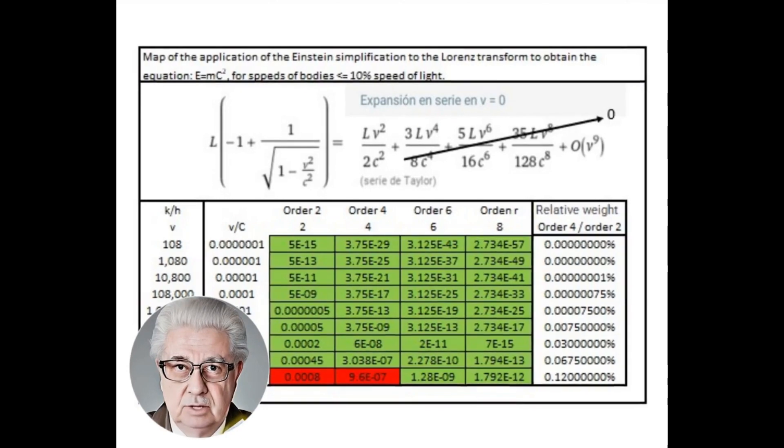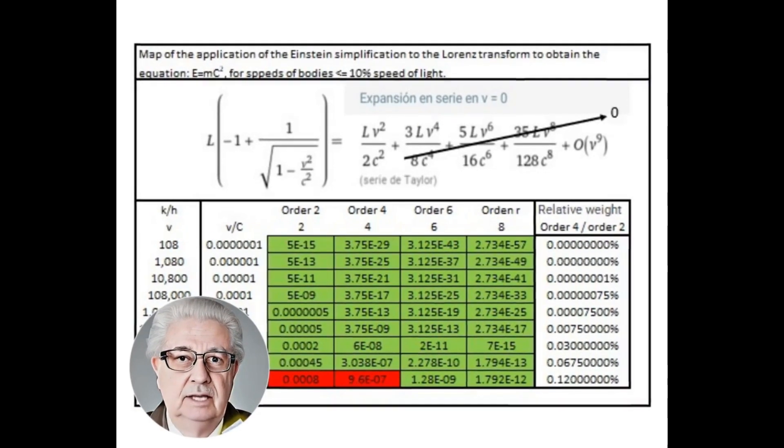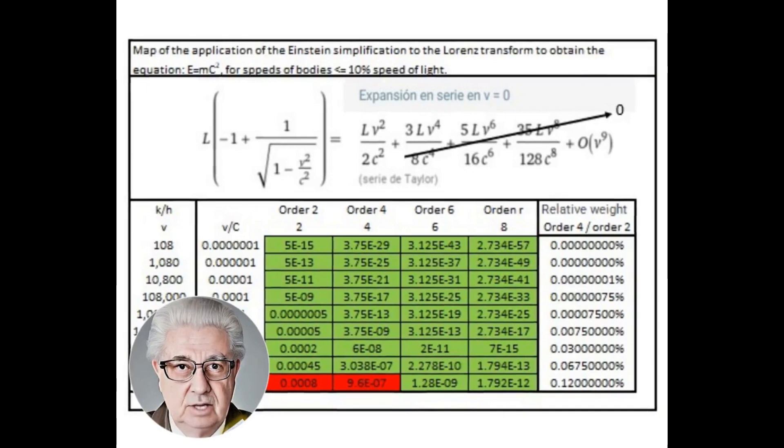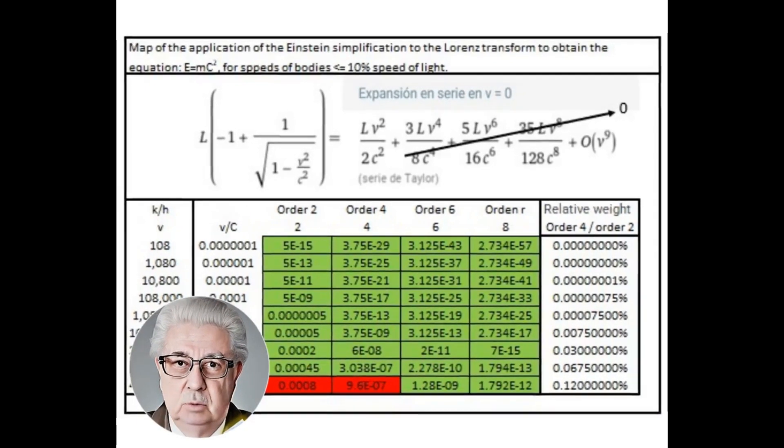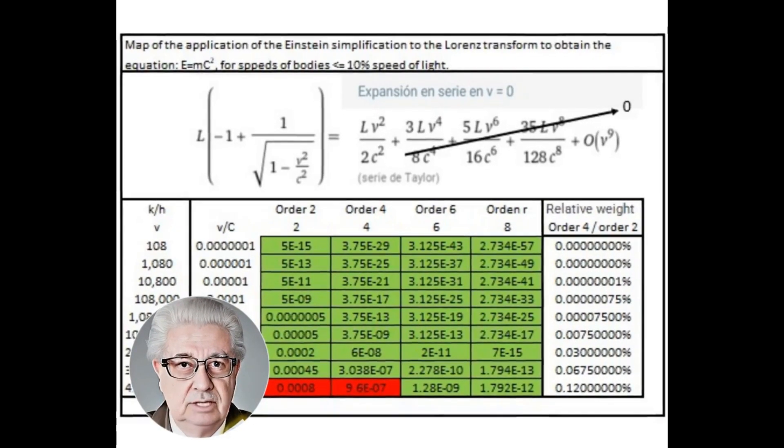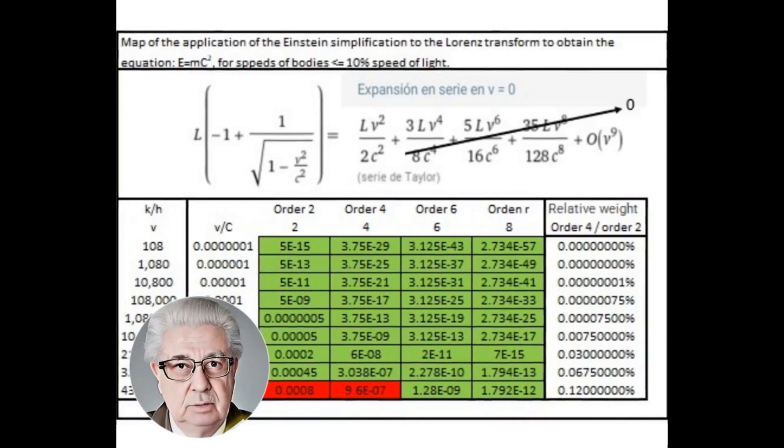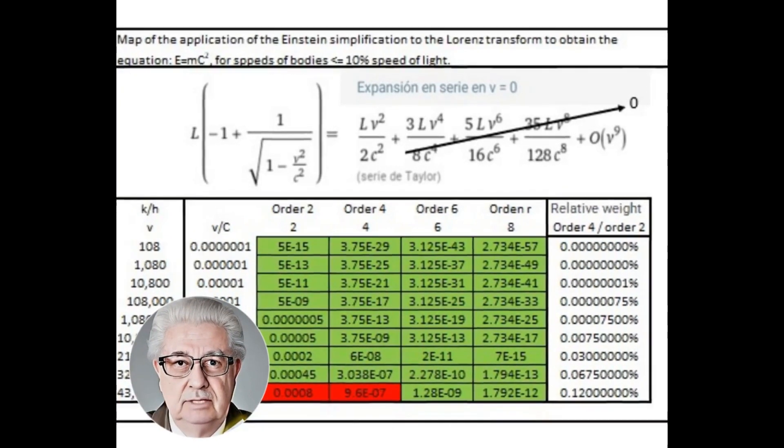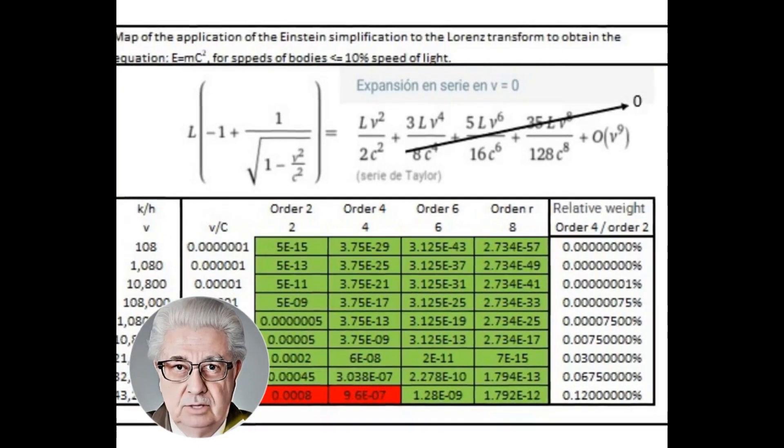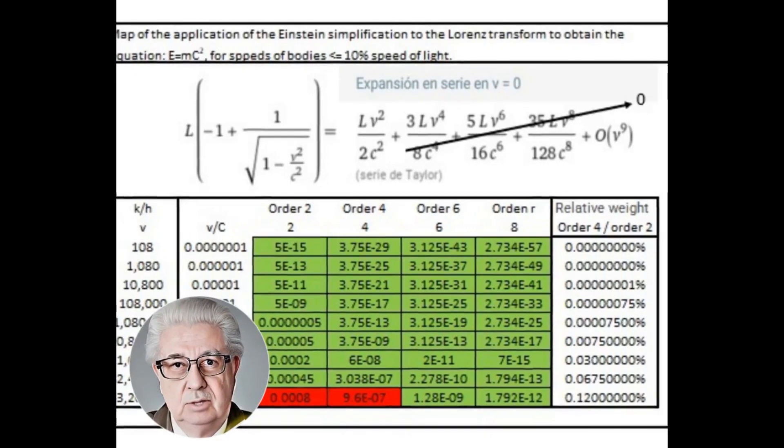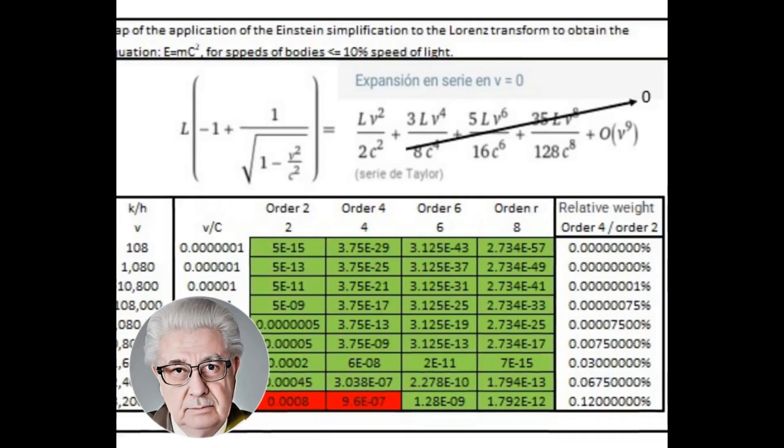In this map, all terms of order greater than 2 are eliminated, and the areas where the approximation makes sense are highlighted in green. It would take the body in motion relative to the system at rest to travel at more than 5% of the speed of light for it to begin to mean 0.12% the fourth order term of the Taylor series, which is equivalent to more than 43 million kilometers per hour.